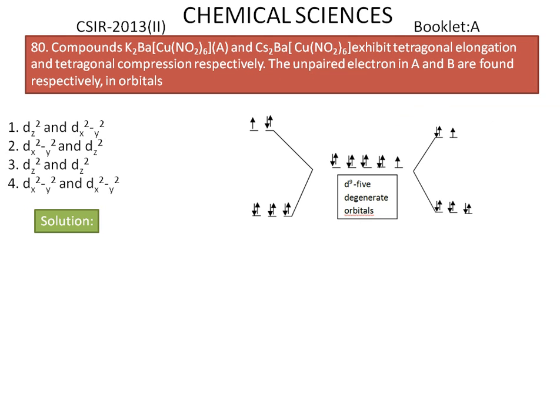According to Jahn-Teller distortion, the distortion arises mainly from the repulsion of ligands by the electrons occupying EG orbitals. Usually, half-filled orbitals experience lesser shielding effect, so they will have greater effective nuclear charge. Consequently, the ligands on that axis are drawn closer to the Cu²⁺ nucleus.